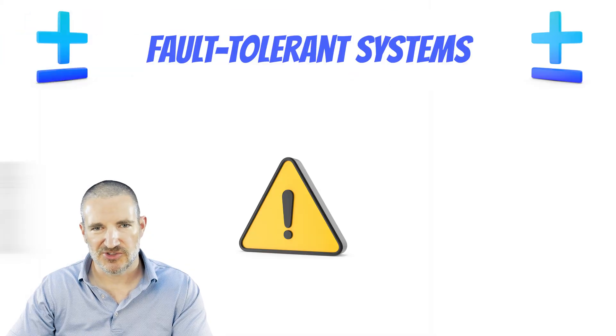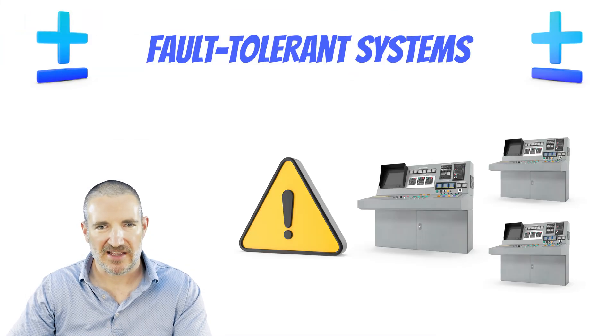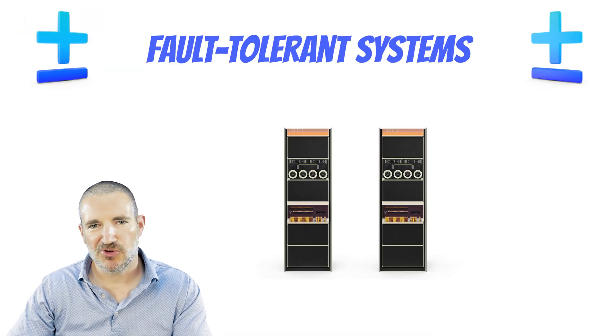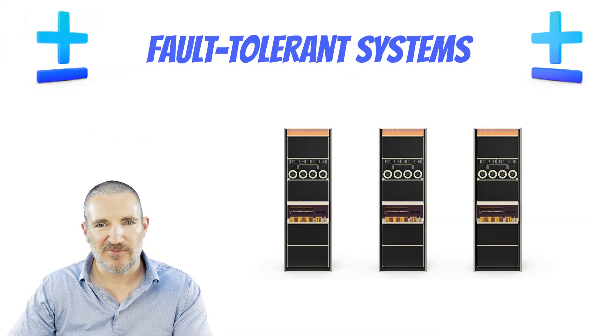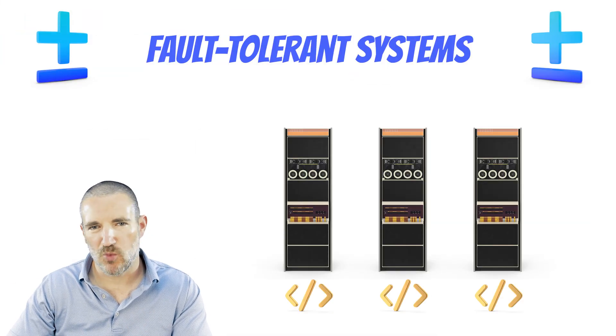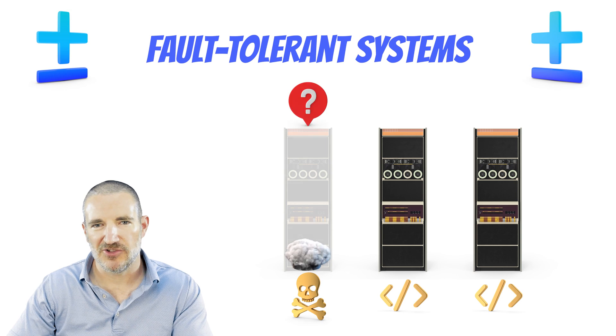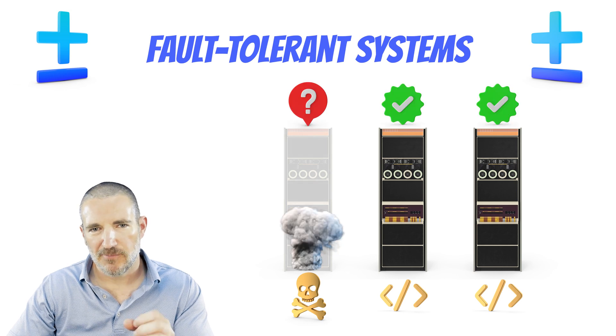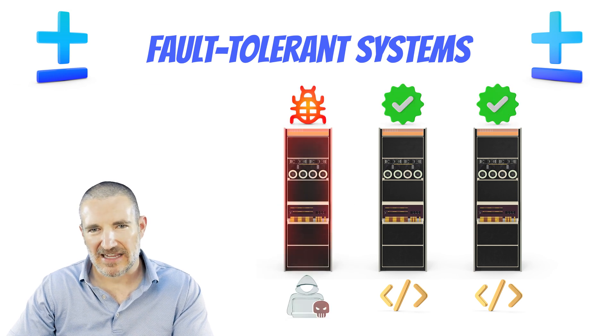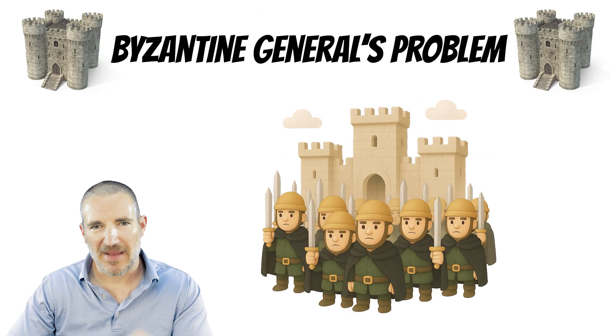In the 60s, critical systems needed backup. Multiple computers ran the same logic, so if one failed, the others outvoted it. But what if some were hacked? That's where the Byzantine Generals problem comes in.